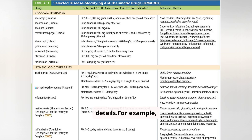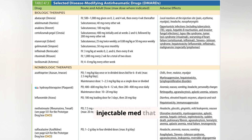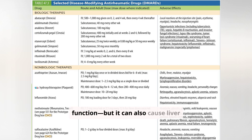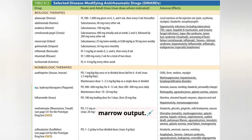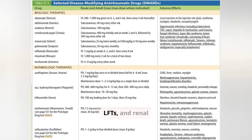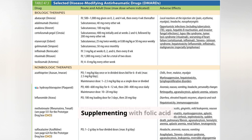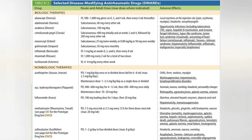For example, methotrexate is a weekly oral or injectable medication that suppresses immune function, but it can also cause liver damage and reduce bone marrow output. Always monitor CBC, LFTs, and renal function. Supplementing with folic acid can help reduce side effects.